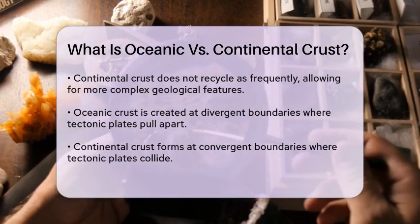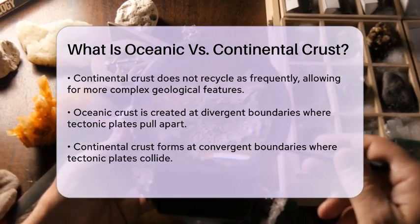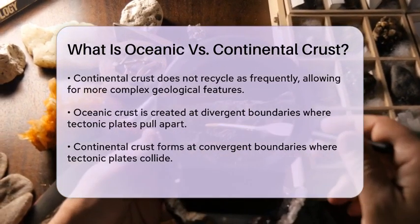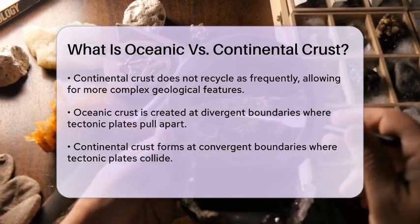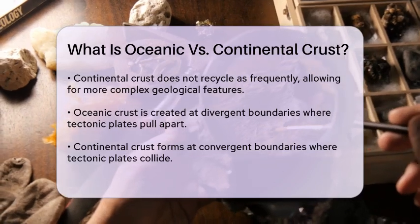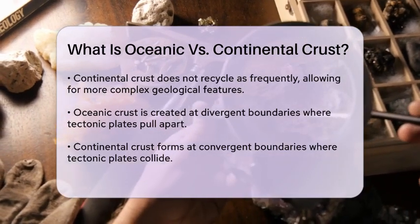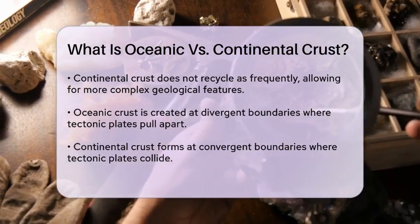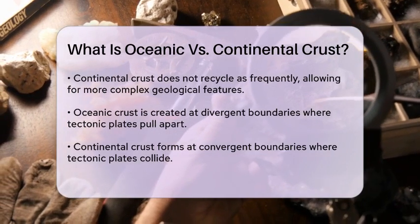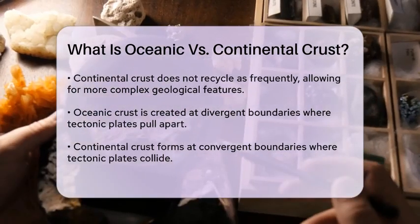This crust is older than Oceanic Crust, with some parts being over four billion years old. Unlike Oceanic Crust, Continental Crust does not get recycled as frequently, which allows it to accumulate more complex geological features over time.